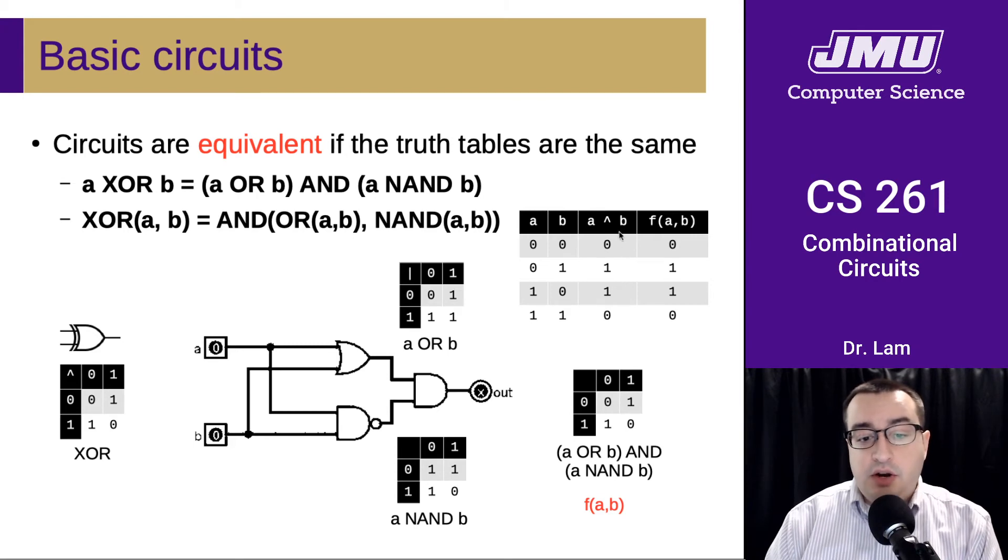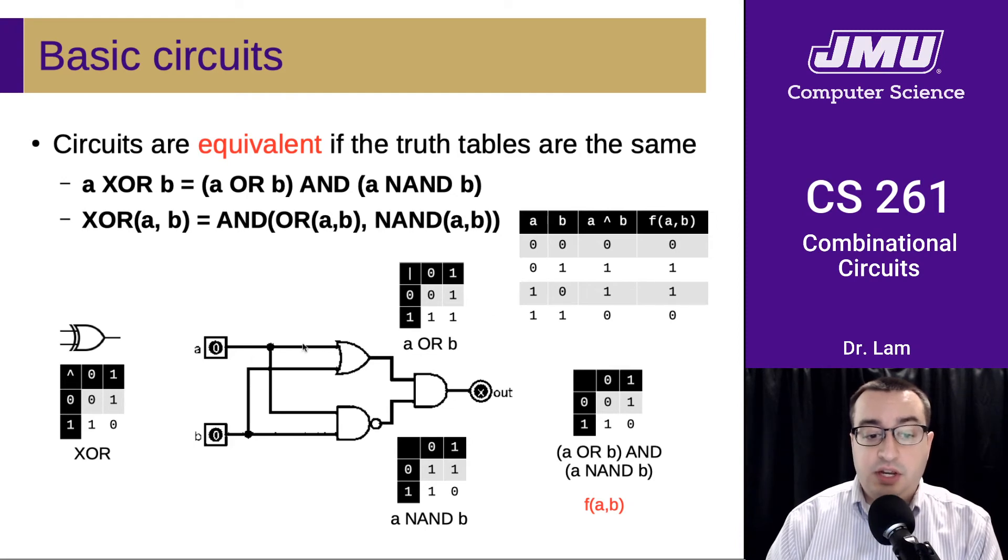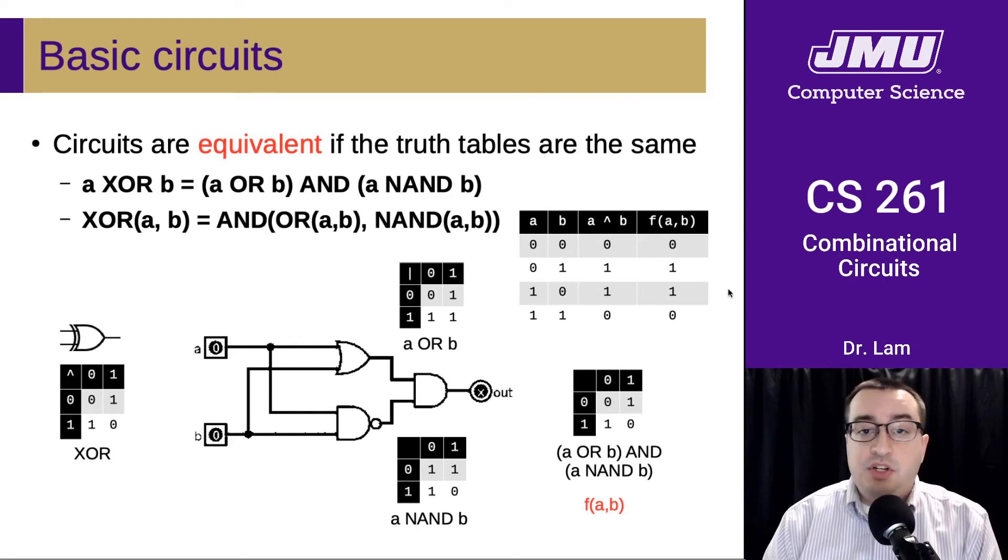And so here is the truth table for A XOR B. And then this is the truth table for this entire circuit that we have here, where F of AB is this formula. And like we just did, if you work it all out, these columns are exactly the same, which is the same as proving that those two things are equivalent.